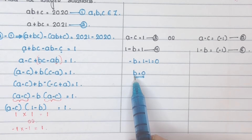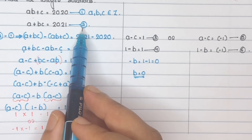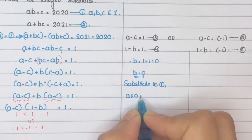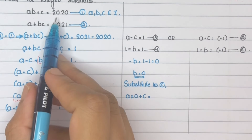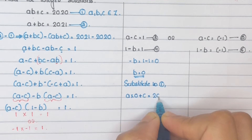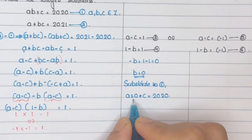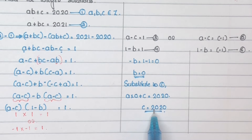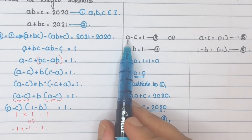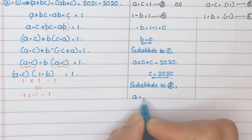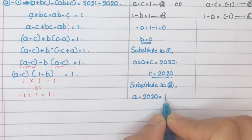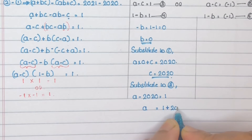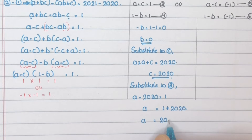There is no B in equation 3, so substitute B equals 0 into equation 1. Equation 1 is AB plus C equals 2020. Substituting: A times 0 plus C equals 2020, so 0 plus C equals 2020, giving C equals 2020. Now substitute C equals 2020 into equation 3: A minus 2020 equals 1.